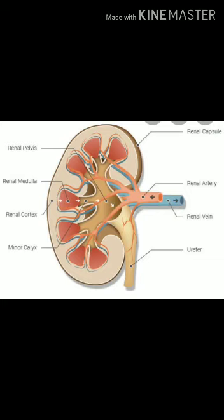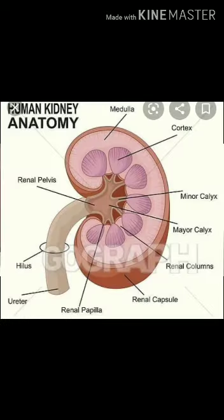What are the main functions of the kidney? The main functions are: removal of nitrogenous waste, that is urea, from the body; removal of excess water and salt from the body; and helping in the osmoregulation of the body. Next, we will start with the main unit of the excretory system of the kidney, which is called the nephron.